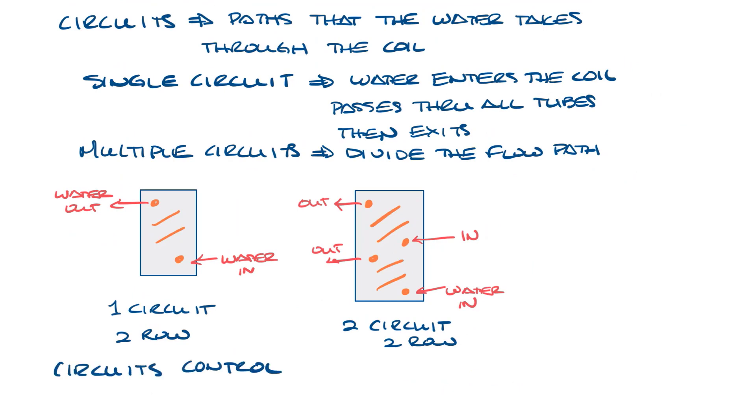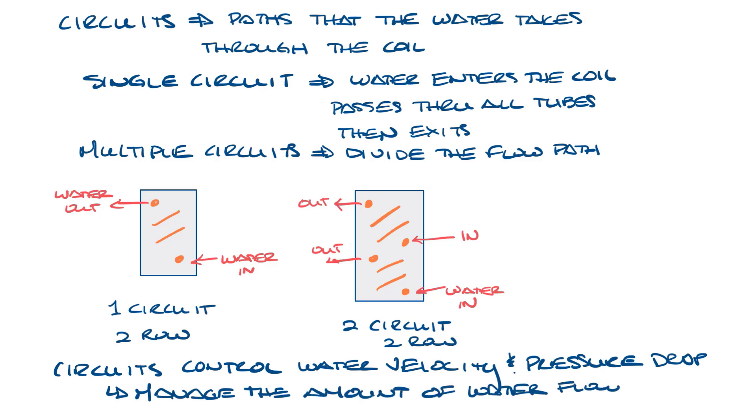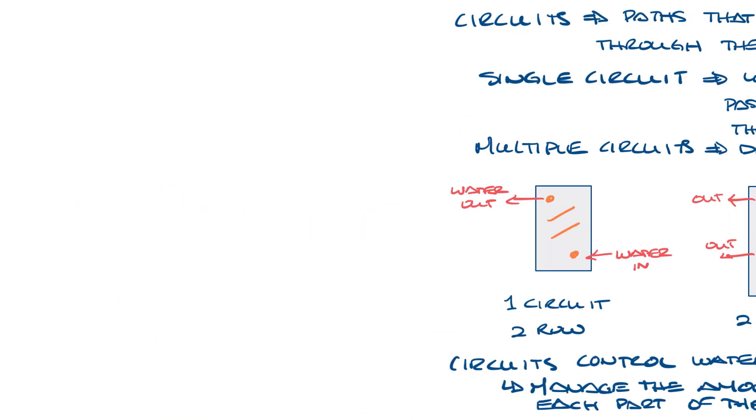Circuits are used to control the water velocity and pressure drop within the coil. They help in managing the amount of water flowing through each part of the coil, which affects the heat transfer efficiency and water pressure drop. More circuits usually means lower water pressure drop.